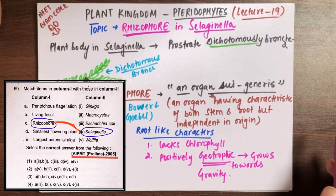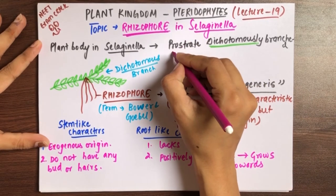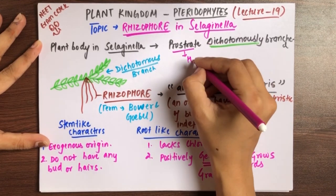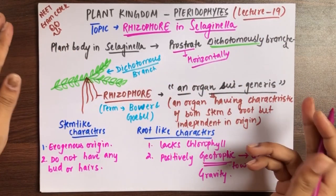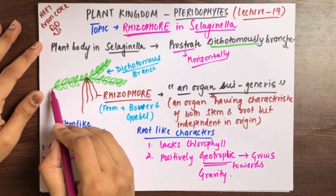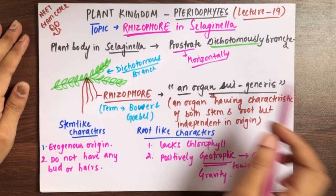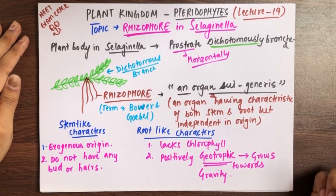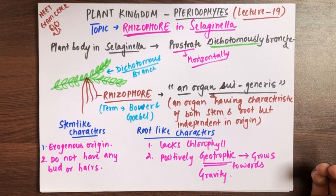Since the Rhizophore has characters of both stem and roots, it is called 'an organ sui generis' — an organ having characteristics of both stem and roots but independent in origin. Rhizophore is found only in Selaginella. It is not in NCERT, but you can expect questions about it in NEET. Selaginella is a prostrate, dichotomously branched plant.